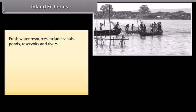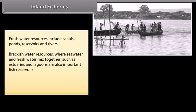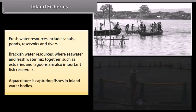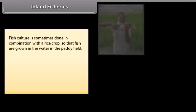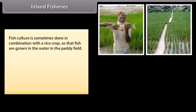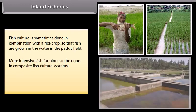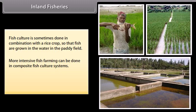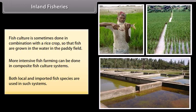Fresh water resources include canals, ponds, reservoirs and rivers. Brackish water resources where seawater and freshwater mix together, such as estuaries and lagoons, are also important fish reservoirs. Aquaculture is the capturing of fishes in inland water bodies. Fish culture is sometimes done in combination with rice crop, so that fish are grown in the water in paddy fields. More intensive fish farming can be done in composite fish culture systems, using both local and imported fish species.